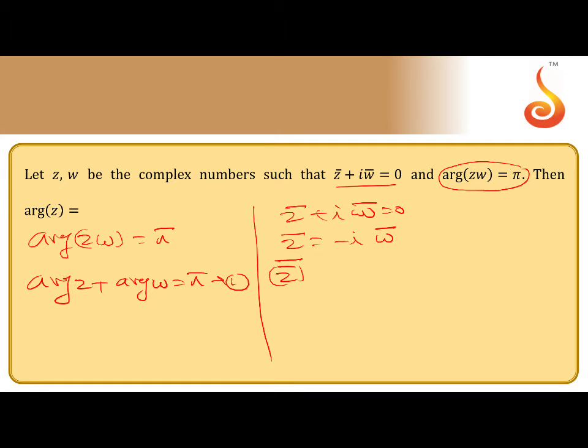Take conjugate on both sides. If I apply conjugate, z̄ bar is z, and take the conjugate of each one separately. So that z equals conjugate of -i times w̄, which is iw̄ bar, which is w. So z = iw.